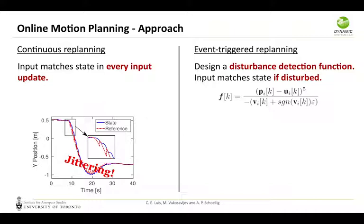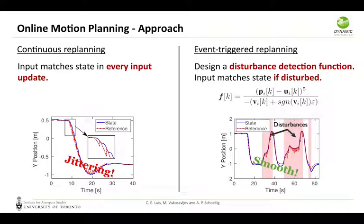This led us to design a disturbance detection function in which case the input will match the state only if we decide that the agent is being disturbed. The main idea is that we want to capture whenever the agent deviates far from the reference, in which case the function should produce a large output that we can threshold and decide whether the agent is being disturbed or not. The result is that, for example in the image on the lower right, on the pink segments the agent is being disturbed and we can see that the reference is actually tracking the state. And whenever the agent stops being disturbed, the state of the agent accurately tracks the reference.